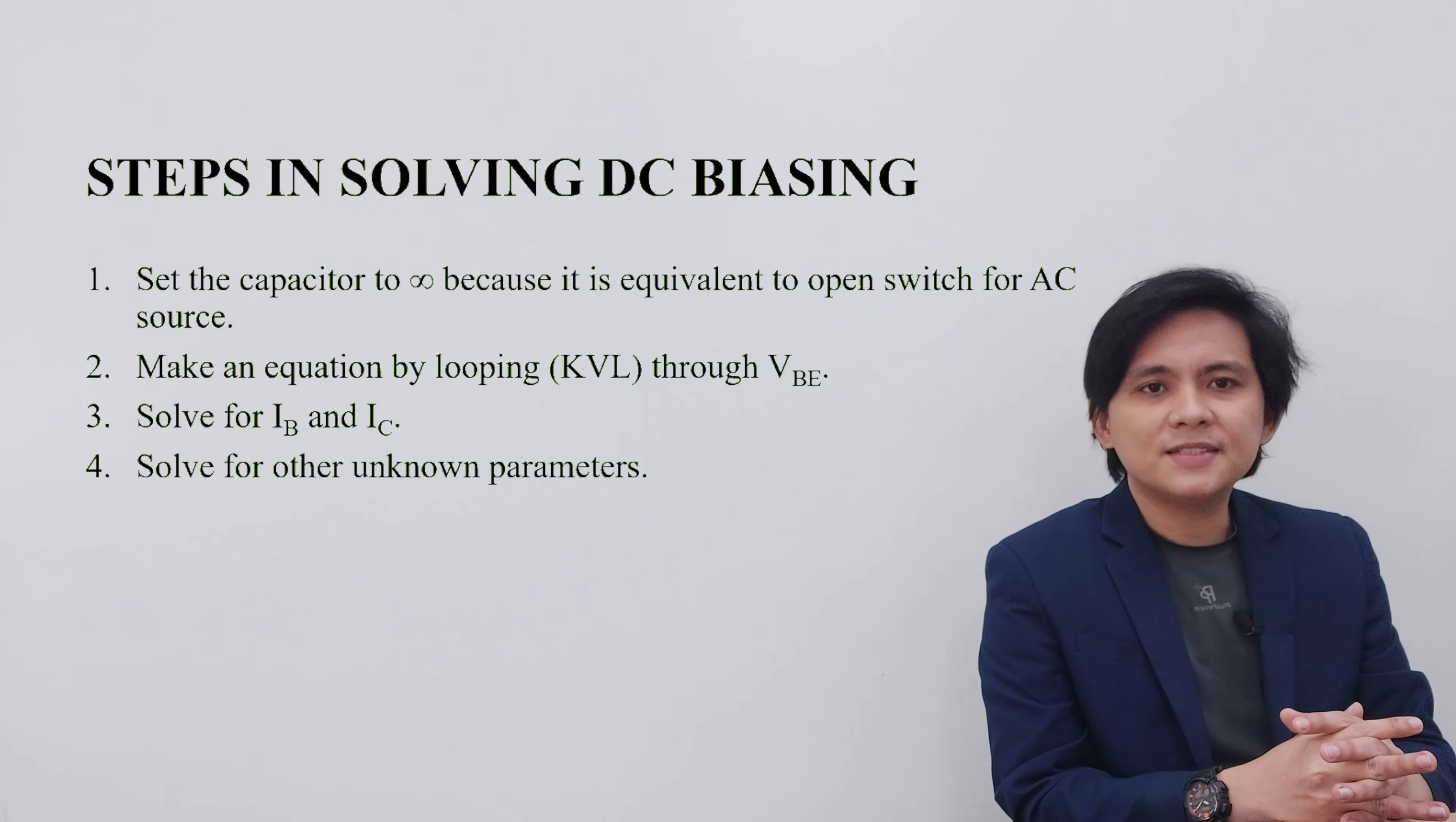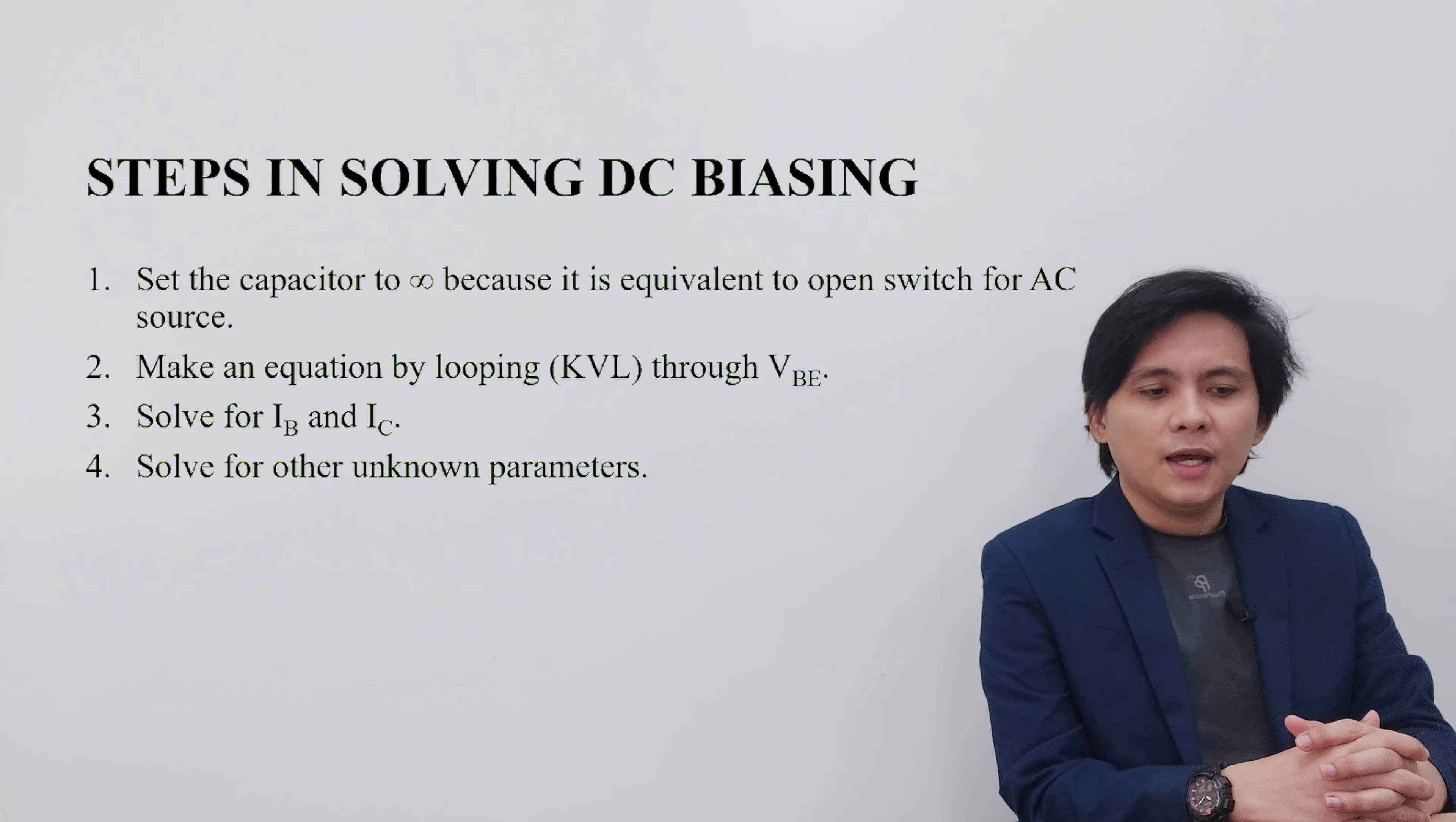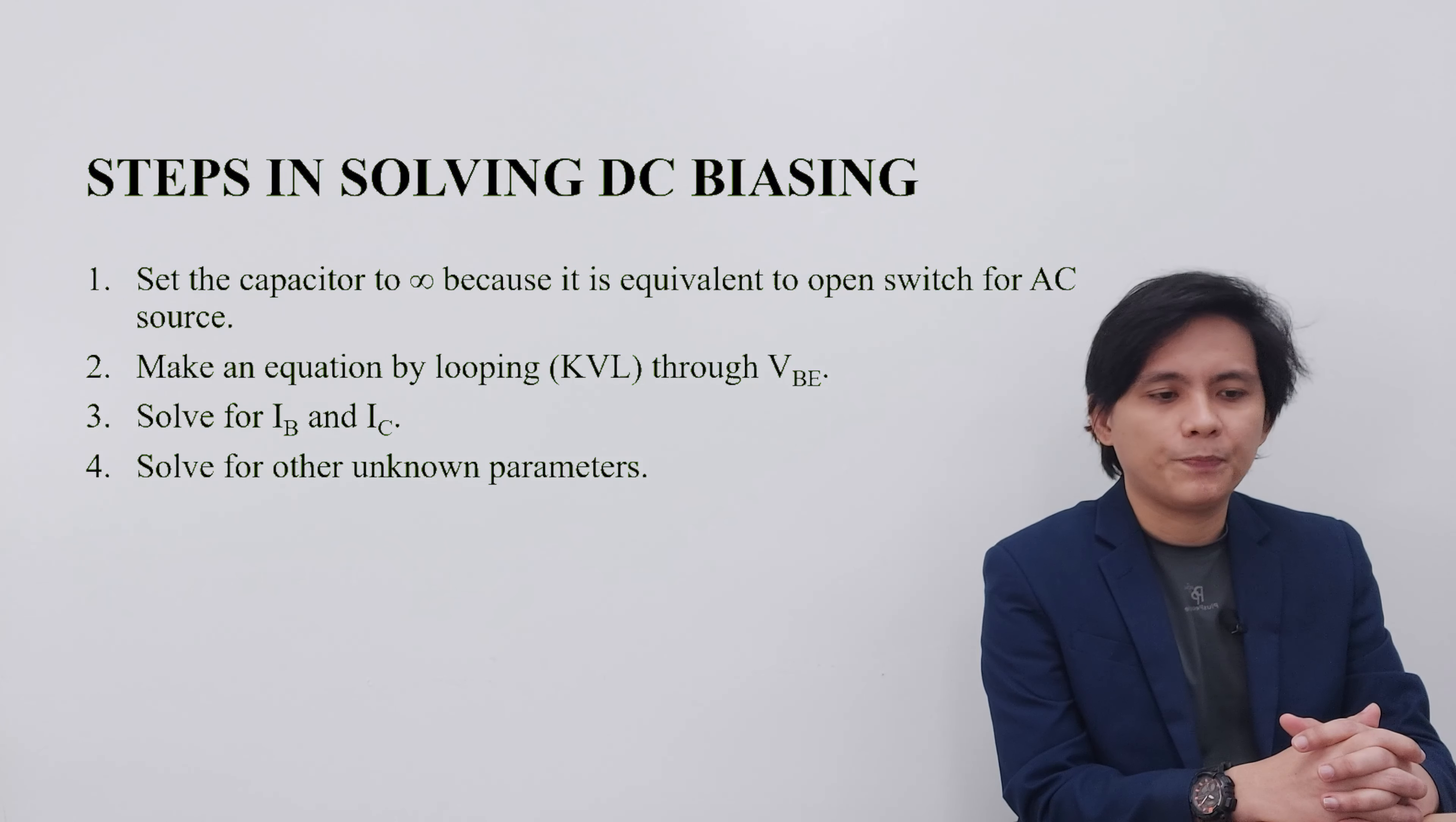The second step is to make an equation by looping, which is usually done by KVL. The third one is to solve for IB and IC. IB is usually the one that is on the input side and IC on the output. And lastly, we have to solve for the unknown parameters.